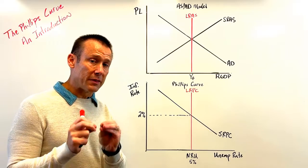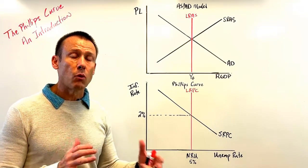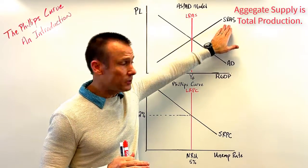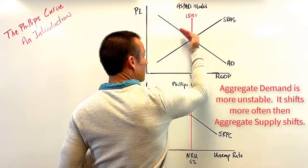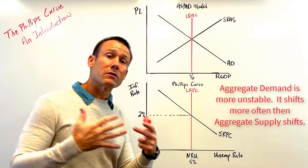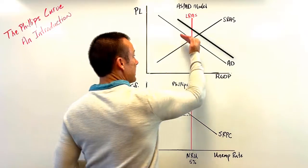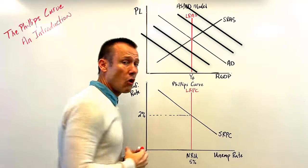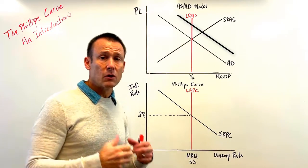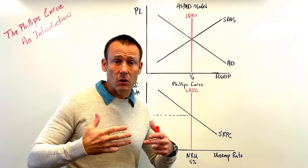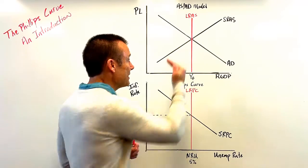Why is the relationship inverse? We can relate it to the AS-AD model. The key question is: which curve — the SRAS or the AD — is more unstable? The answer is AD, total spending. AD is subject to far more shocks; there are more demand shocks than supply shocks. As AD moves along the SRAS curve and shifts to the right, total spending increases, prices rise, the inflation rate goes up, and the unemployment rate goes down — there's that inverse relationship.